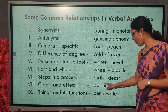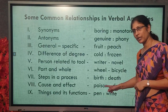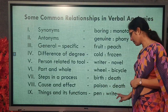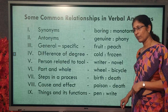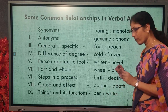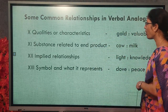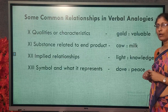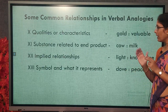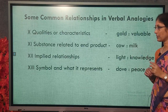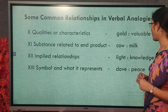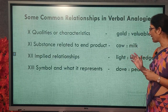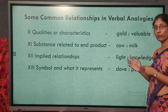Cause and effect — poison causes death: when poison is taken, death is caused. Things and their functions — pen is a thing and the function of the pen is to write; we write with pens. Qualities or characteristics — gold is valuable, diamond is tough, cotton is lightweight. Substances related to end product — a cow gives milk, a tree gives shade or fruit.